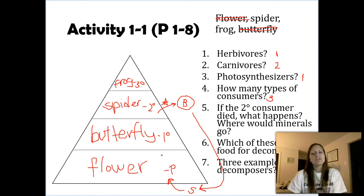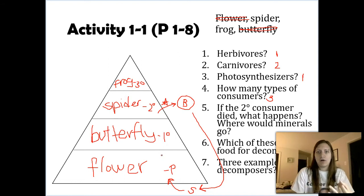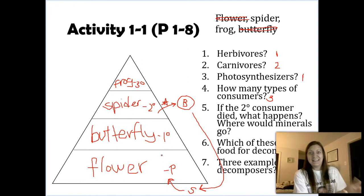Question number six: Which of these can be food for decomposers? This one can be a tricky one. The answer is all four of these: flowers, butterflies, spiders, frogs. Anytime any single organism, doesn't matter what trophic level it is, any organism, if it dies of natural causes or dies of not being eaten by something else, decomposers can come in. Vultures don't care if they're eating a deer or a cow or a wolf. They don't care, it's dead.